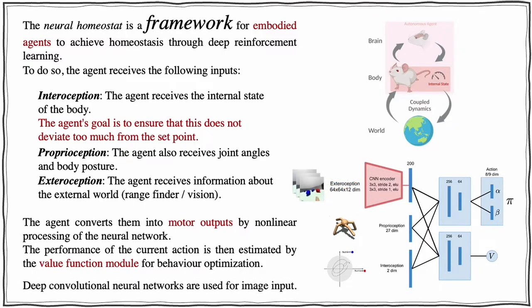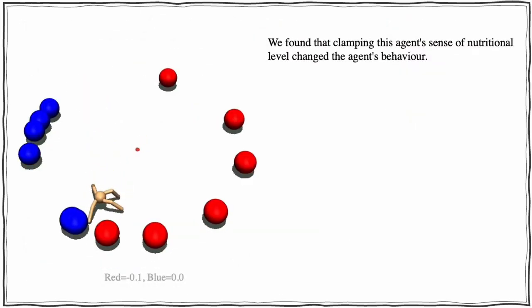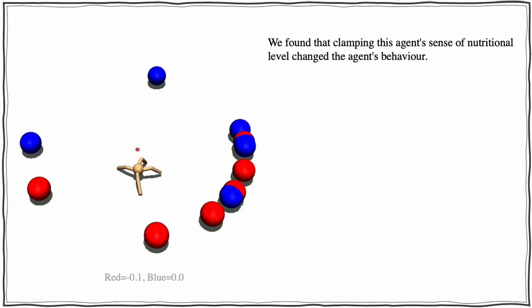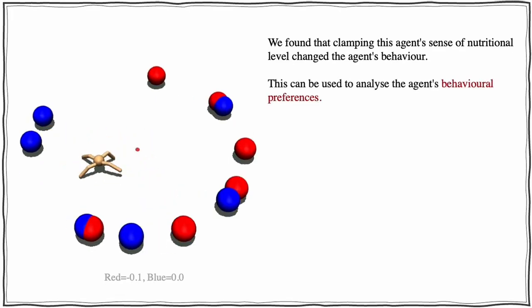Deep convolutional neural networks are used for image input. We found that clamping this agent's sense of nutritional level changed the agent's behavior. This can be used to analyze the agent's behavioral preferences.